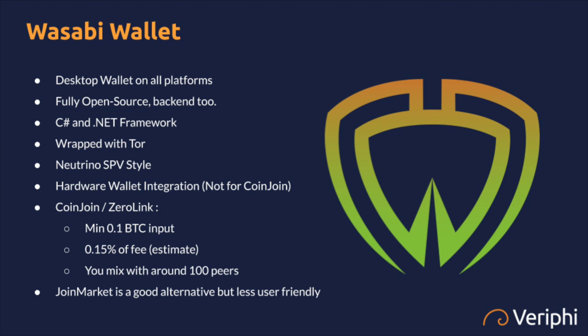The transaction link that someone could follow through your addresses is now broken — or rather, obscured. With 20 people there's a 5% chance a given 0.1 BTC output is yours. But in Wasabi you mix with around 100 peers, so there's roughly a 1-in-100 chance for anyone trying to analyze you. There's also around a 0.15% fee every time you mix coins with Wasabi, and I'm going to show you what it looks like in a second.